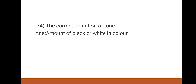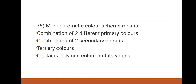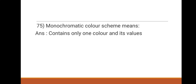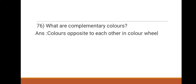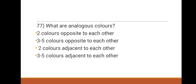Next question: monochromatic color scheme means what? Options: combination of two different primary colors, combination of two secondary colors, tertiary colors, contains only one color and its value. The right answer is monochromatic color scheme means contains only one color and its value. Next: what are complementary colors? Options: colors adjacent to each other in the color wheel, colors opposite to each other in the color wheel, any color and black, any color and white. The right answer is colors opposite to each other in the color wheel.